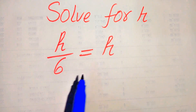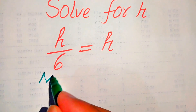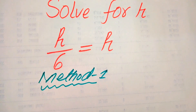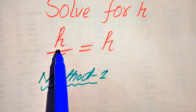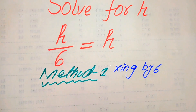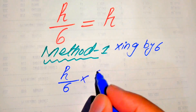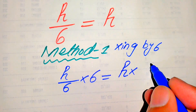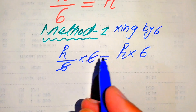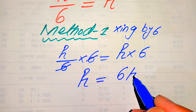We can solve this linear equation by two methods. In the first method, we first remove the fraction sign from the left-hand side. To remove this fraction we multiply both sides by 6, so h over 6 multiplied by 6 equals h multiplied by 6. This 6 cancels out with this 6, and we get h equals 6h.